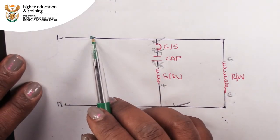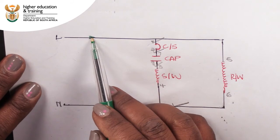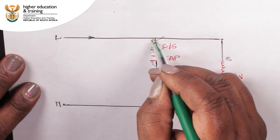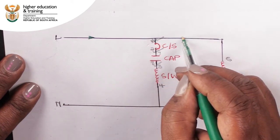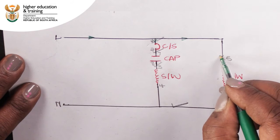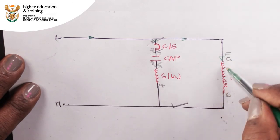In its current configuration, the current flows from live through the start circuit and through the run winding from the top of the page to the bottom. We can designate this the forward direction.